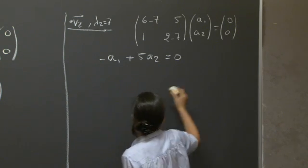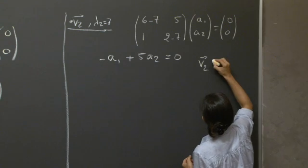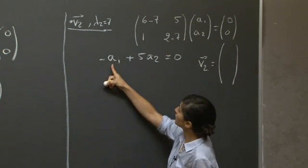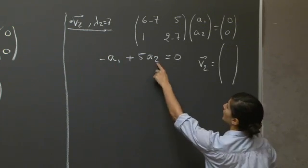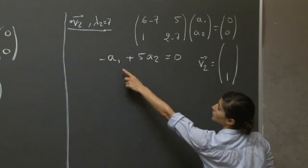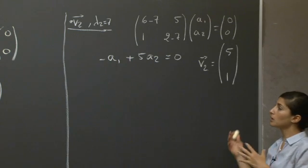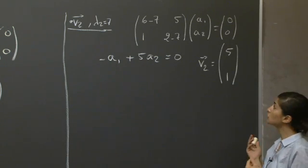So we can pick a value for a1 or a2 and write down a vector v2 in, for example, the form of a1 equals, let's pick a2 equals 1, and we would have a1 equals 5, for example. Again, if you wanted an orthonormal basis formed by your v1, v2, you would just normalize these two vectors.